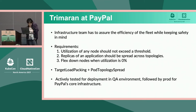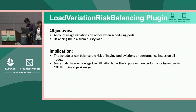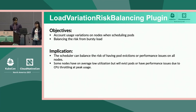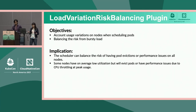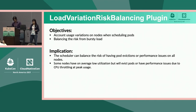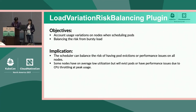I will introduce the load variation risk balancing plugin, designed to solve an issue observed in one of our production clusters. Even when nodes have the same average utilization when considering scheduling preference, they may have significantly different load variations. It's very important to account for usage variations on nodes when scheduling pods. The higher the variation of load on a node, the higher the risk of scheduling a pod there — which can lead to pod evictions or performance issues if a bursty workload arrives. This plugin is designed to balance such risk.